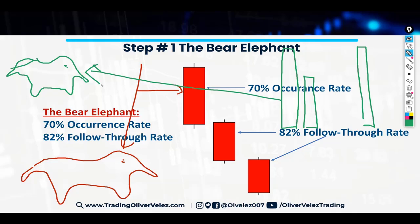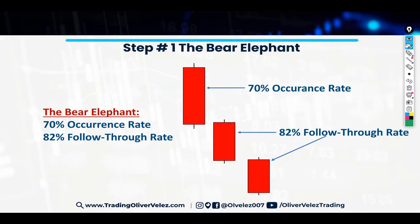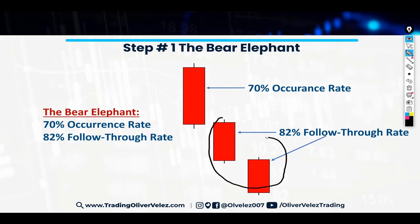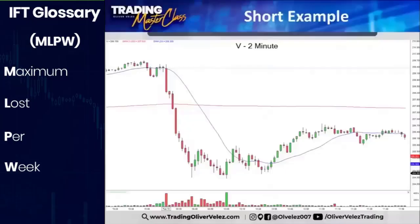Bear elephant bars in a bear market dominate and make it clear which elephant is doing the biggest activity, making the biggest noise. It's the bear elephant bar that has a 70% occurrence rate and an 82% follow-through rate in bear markets — this is not the case in bull markets, but in bear markets it is. So 82% of the time you get more follow-through, and this bar happens 70% of the time over all other bars.